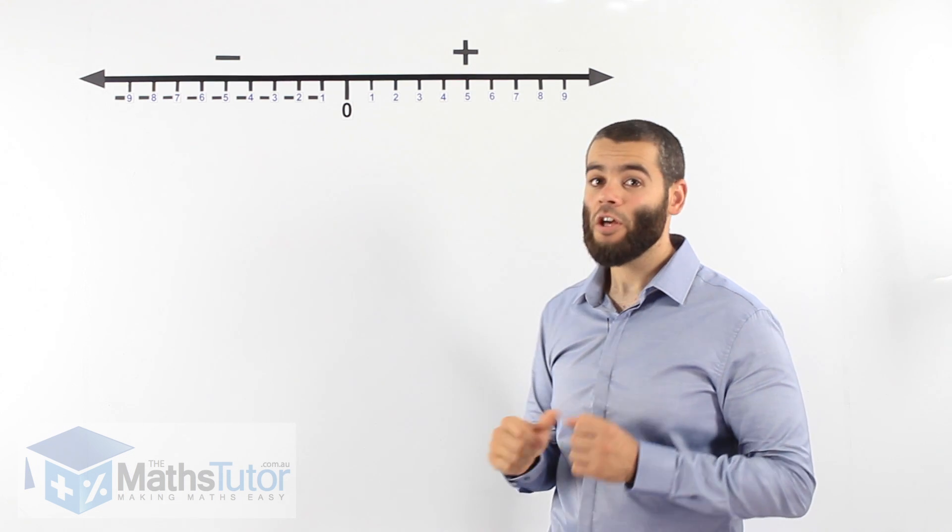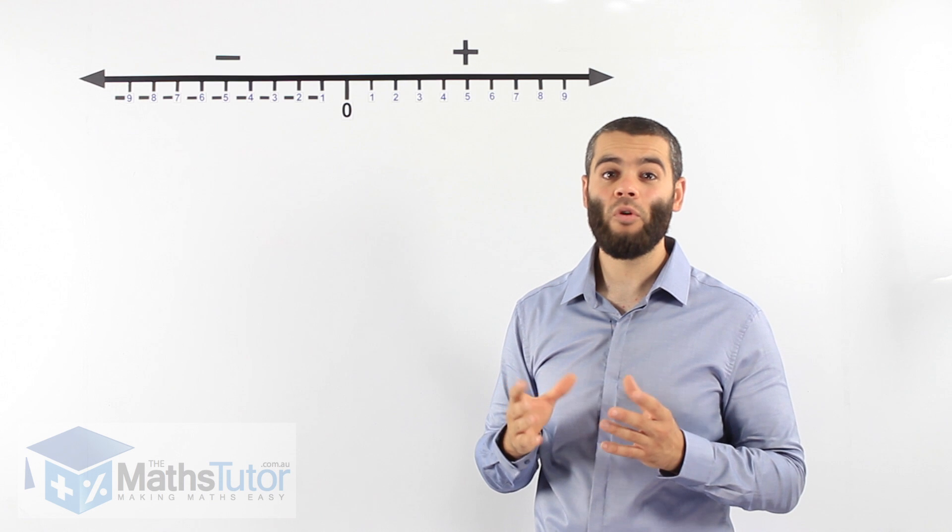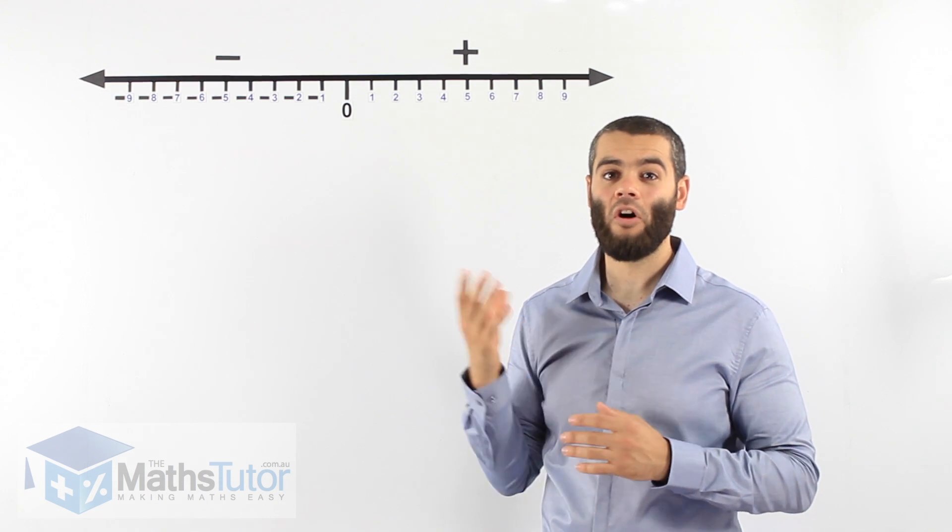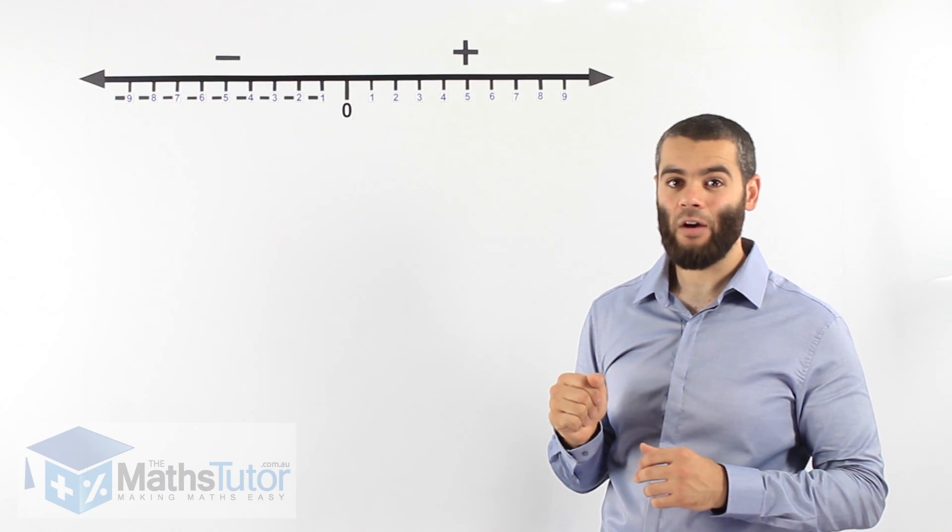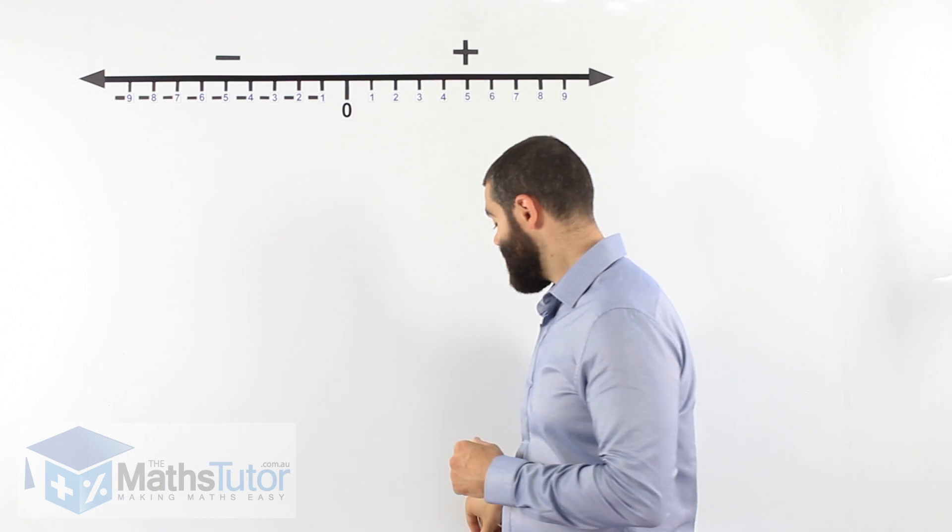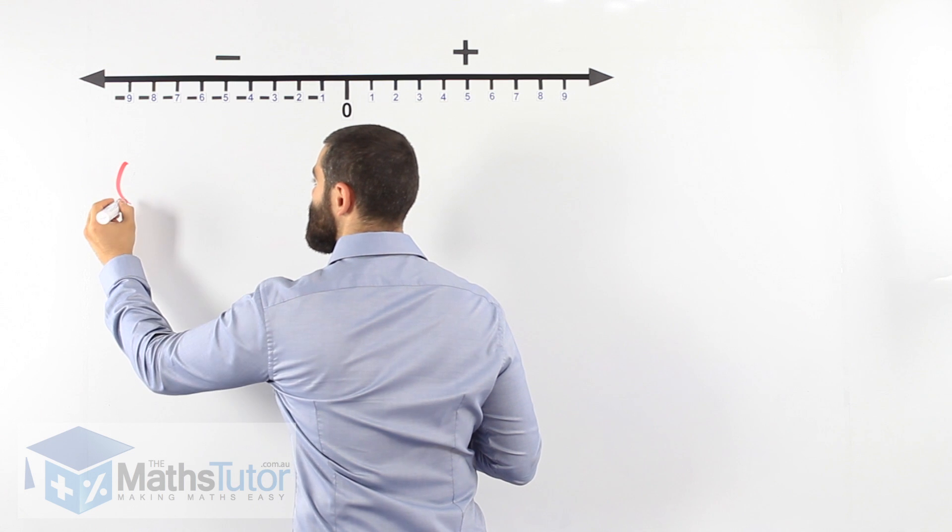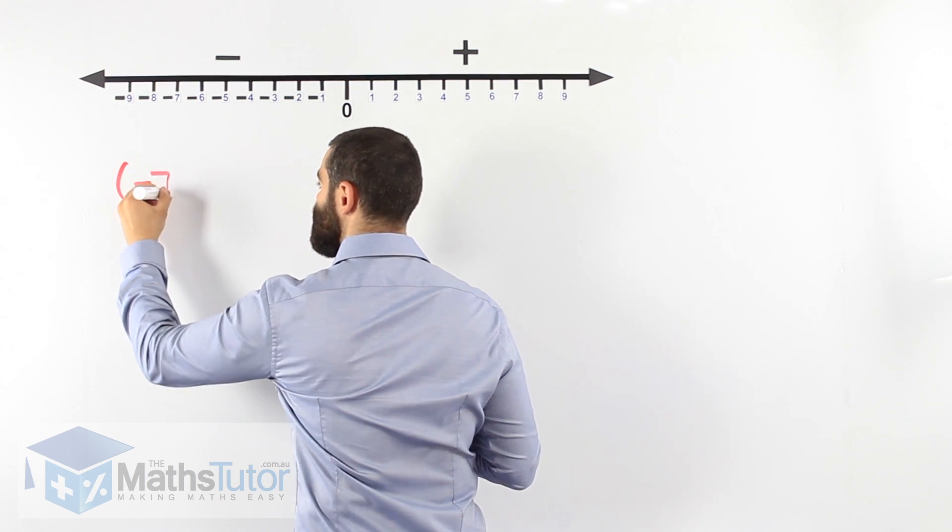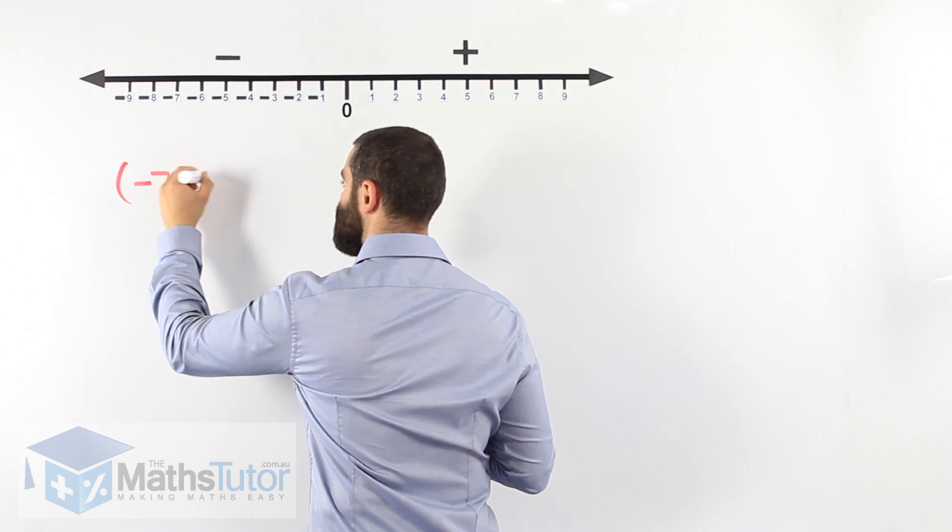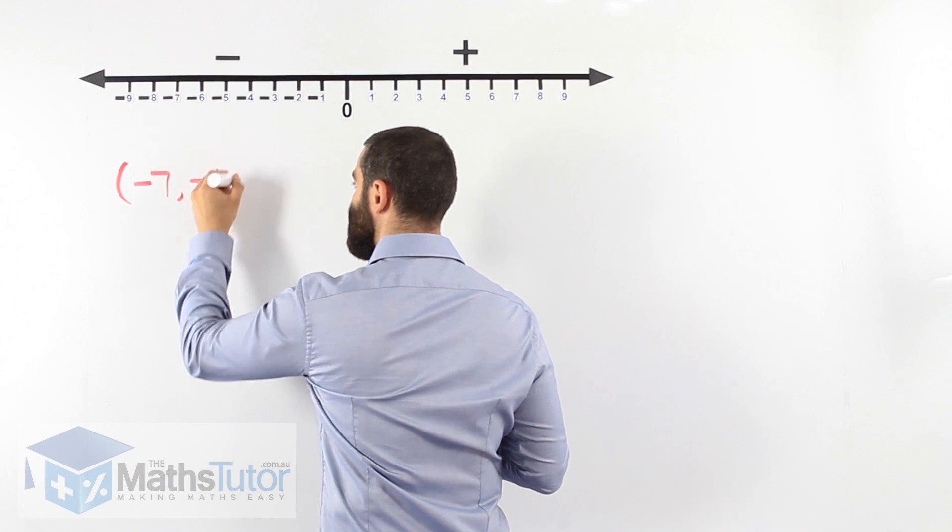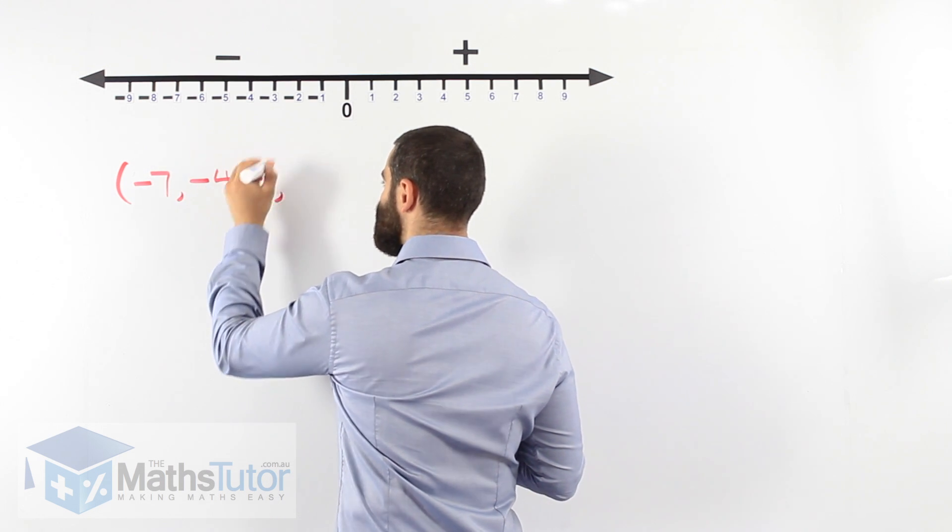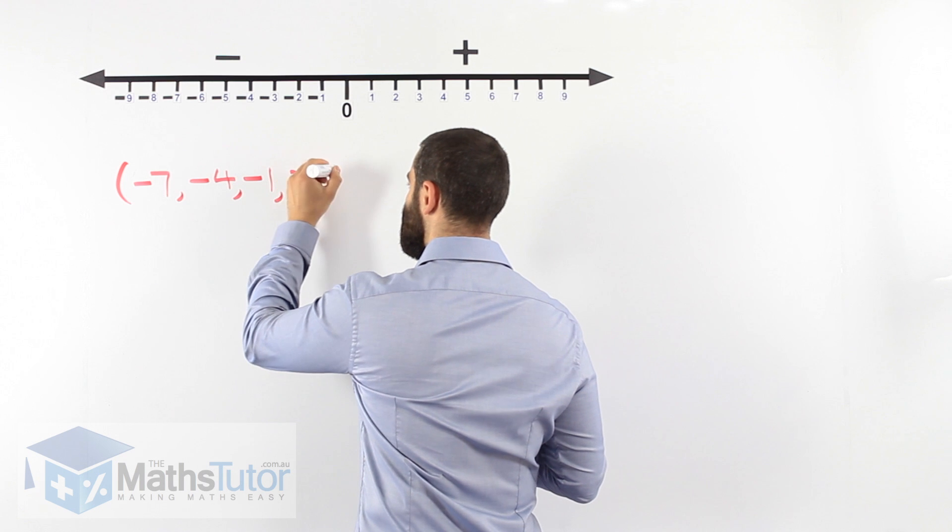At times you're going to be asked to graph or plot the points on a number line. Let's see how we do that. So as an example we're going to be asked to plot negative seven and negative four and negative one and three and five.